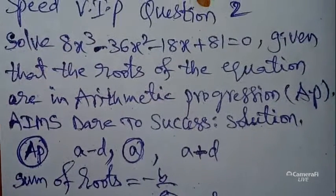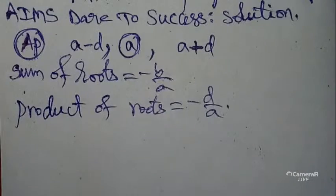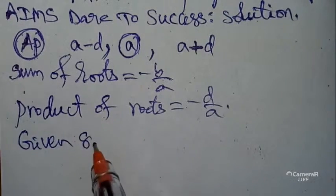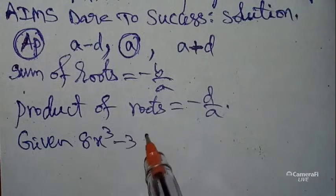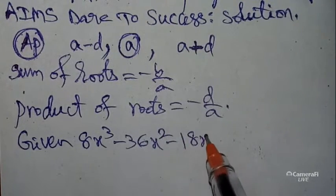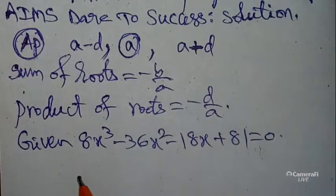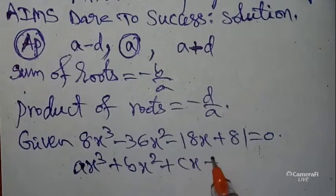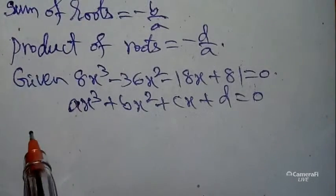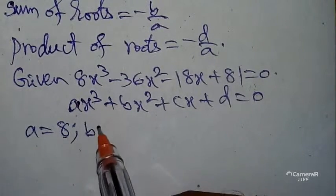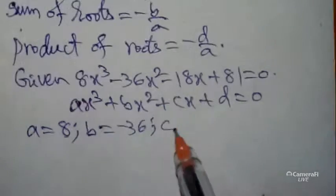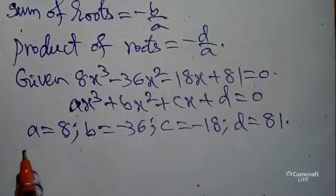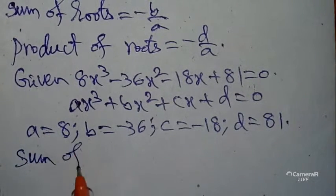According to our question, the given equation is 8x³ - 36x² - 18x + 81 = 0. This is in the form ax³ + bx² + cx + d = 0. Here a = 8, b = -36, c = -18, d = 81.